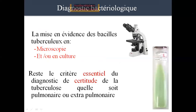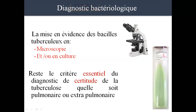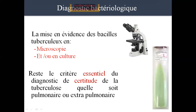Le diagnostic bactériologique : la mise en évidence microbiologique apporte la certitude. Pour faire le diagnostic microbiologique d'une tuberculose, on a deux façons : l'examen microscopique et/ou la mise en culture. L'examen microscopique c'est le minimum et le critère essentiel de certitude diagnostique pour la tuberculose. L'intérêt de la culture c'est surtout pour les tuberculoses extra-pulmonaires qui sont paucibacillaires, c'est-à-dire qu'il y a peu de bacilles.